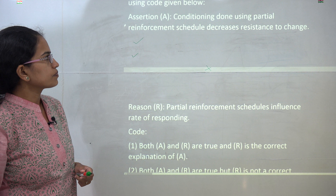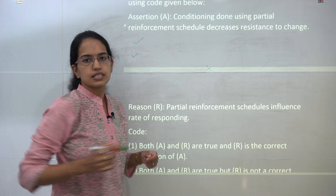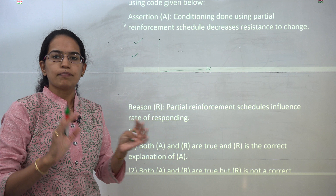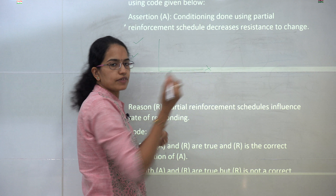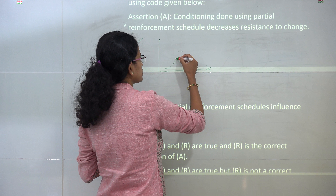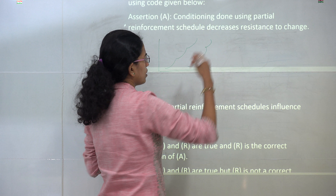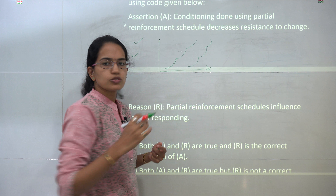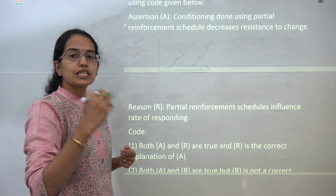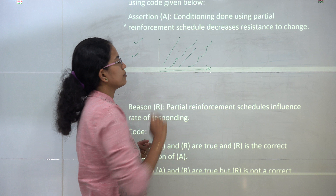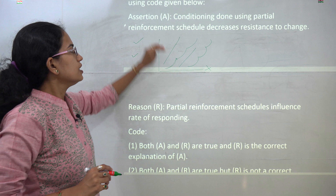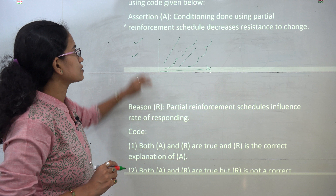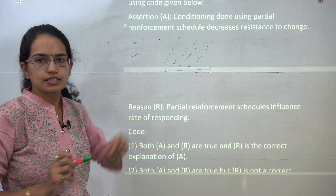The next question is assertion and reason. Conditioning done using partial reinforcement decreases resistance to change or extinction — that is correct. Comparing fixed and variable schedules: for the fixed ratio and fixed interval, the organism is well acquainted with the fact that a response will be provided after a fixed interval. That is not the case for the variable ratio and variable interval. Therefore, partial reinforcement influences the rate of responding — that is the correct explanation. Both statements are true and the reason correctly explains the assertion.